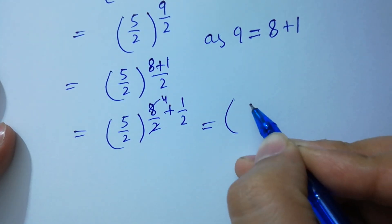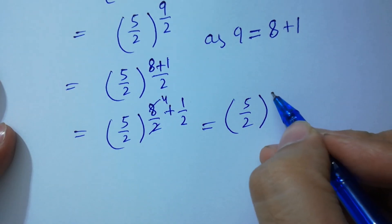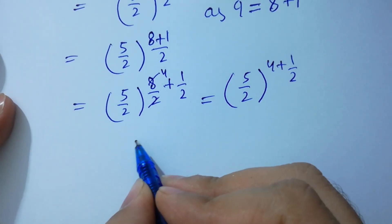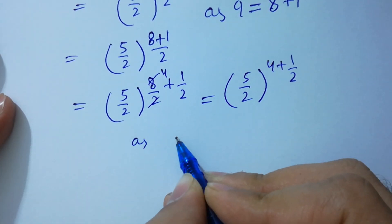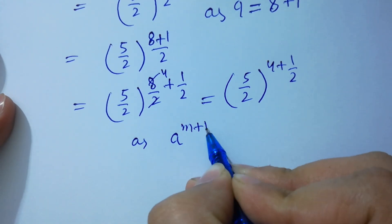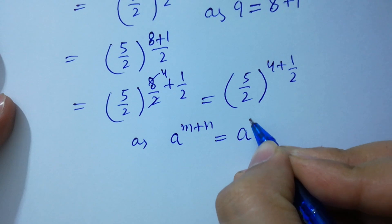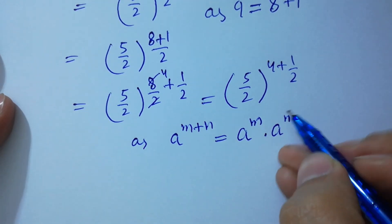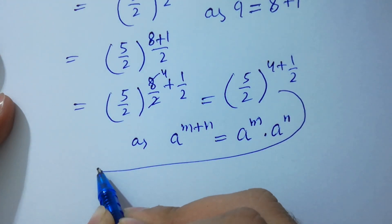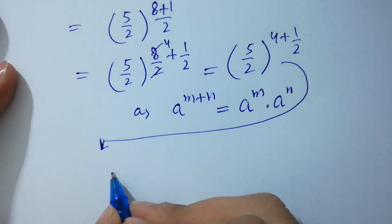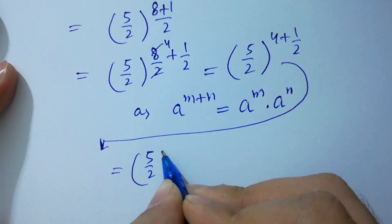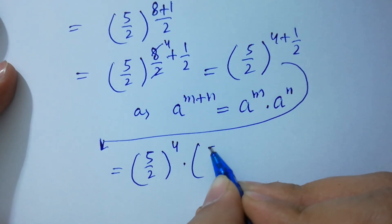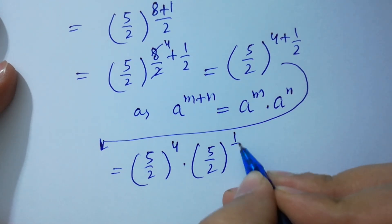So we have (5/2) to the whole power 4 plus 1/2. Using the rule a^(m+n) = a^m · a^n, it will be (5/2)^4 times (5/2)^(1/2).